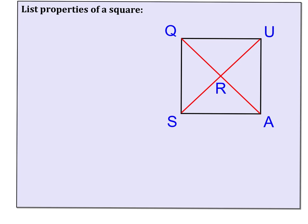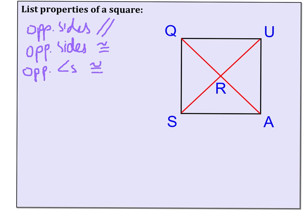So the properties of a parallelogram: opposite sides are parallel, opposite sides are congruent, opposite angles are congruent, diagonals bisect each other, and consecutive angles are supplementary.